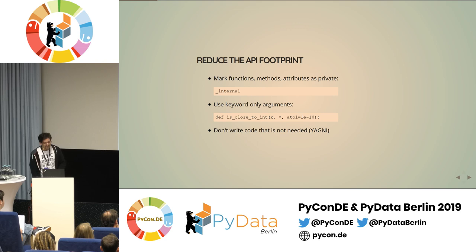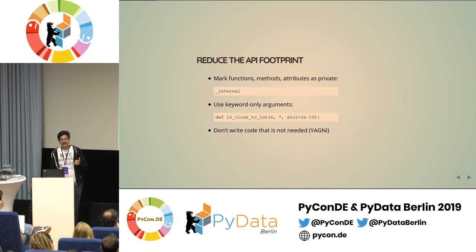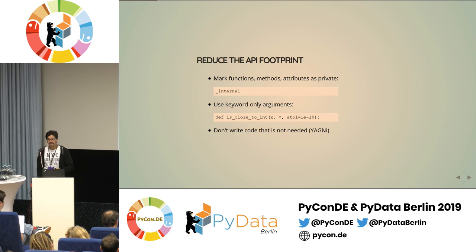Another important point is to use keyword-only arguments. They also narrow down your API because with keyword-only arguments, your user no longer has the freedom to call the parameter positionally. That narrows your API. We'll see later on why this gives you much more freedom when changing things afterwards. And common wisdom: if you don't need something, don't write it — then you can't break it afterwards.